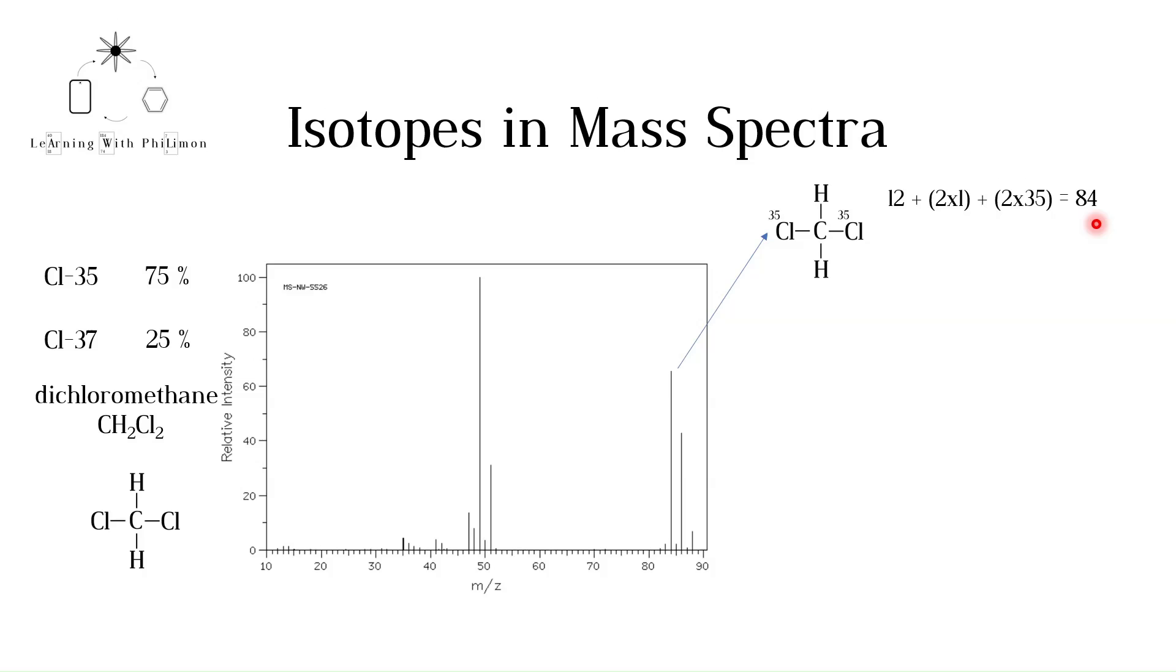The probability of having one Cl35 isotope is 75%, or 0.75 in decimal form. To get the probability of two Cl35 isotopes in one molecule, we multiply 0.75 by 0.75, which is equal to 0.5625.